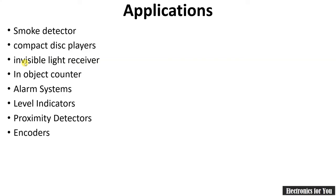Now let's see the applications. Photo transistors can be used in smoke detectors, CD players, invisible light receivers, object counters, alarm systems, level indicators, proximity detectors, and encoders. So this was all about a photo transistor.